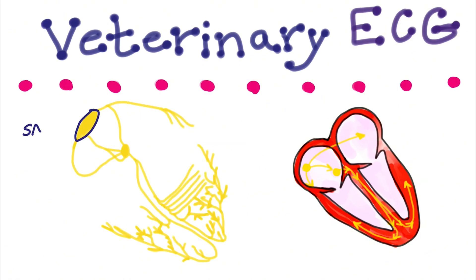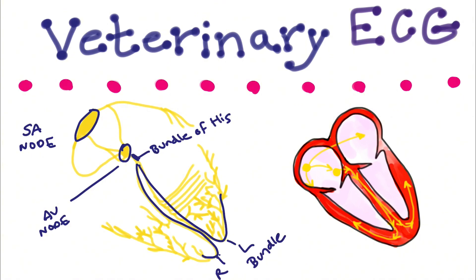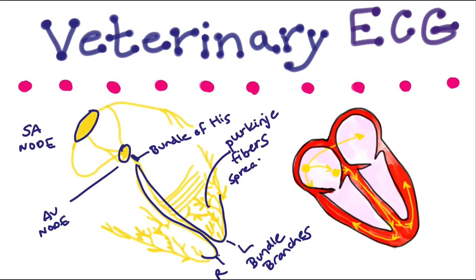Conduction of the ECG waveform starts at the SA node and then moves to the AV node just above the ventricles. From the AV node, the impulses reach the bundle of His, which acts as a pathway to carry the electrical signal to each ventricle via the right and left bundle branches. The impulses are then sent to the Purkinje fibers, which spread the electrical activity through the ventricular muscle tissue.